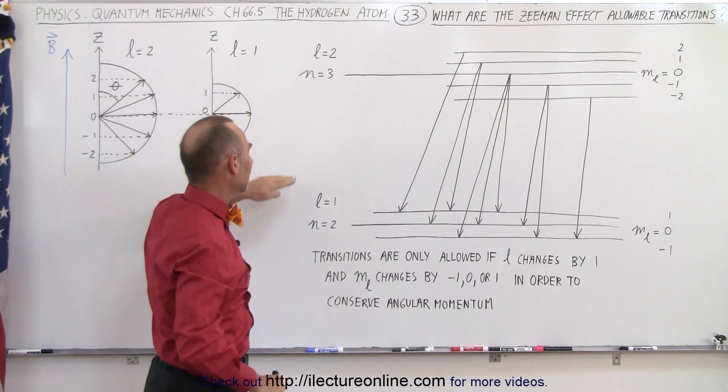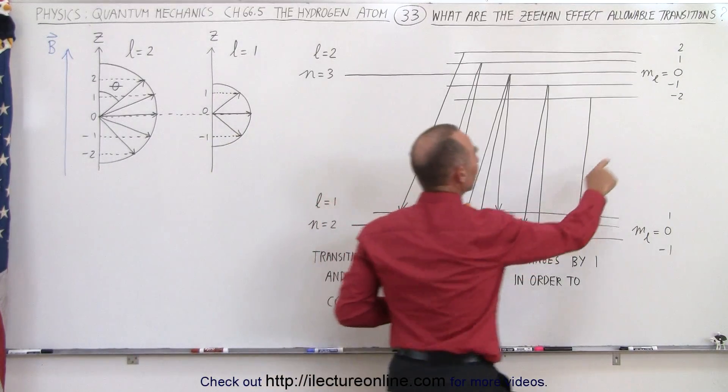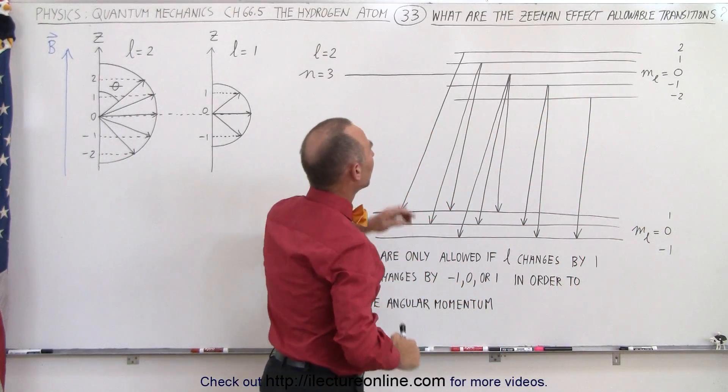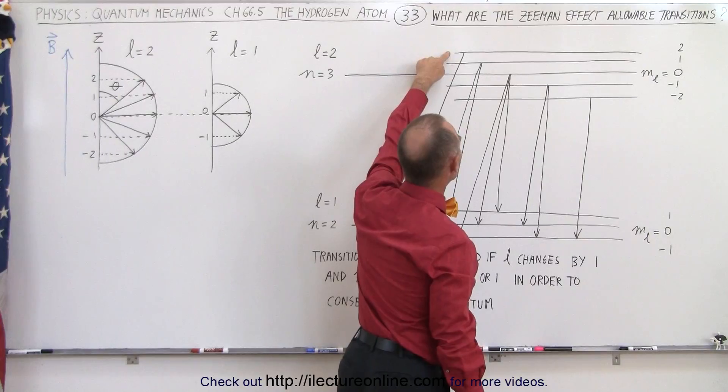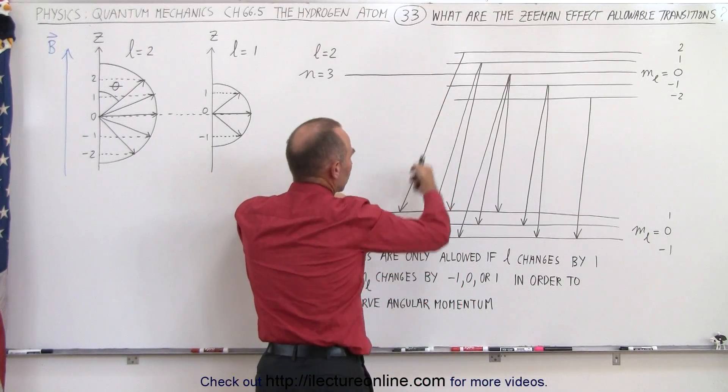So when we go from l equals 2 to l equals 1, the only jumps that are allowed is when the value for m sub l changes by only 1 integer value. Since the number here is 2, and the closest to 2 that we have available is 1, there can only be 1 transition here.